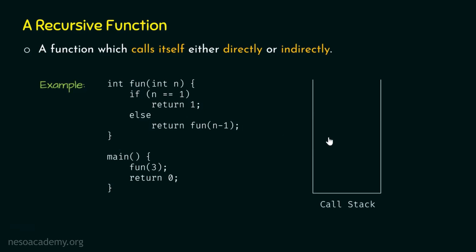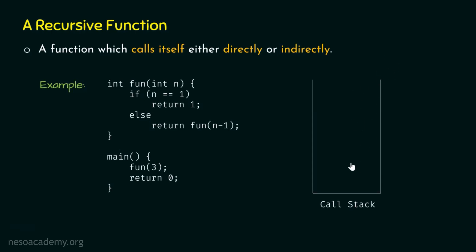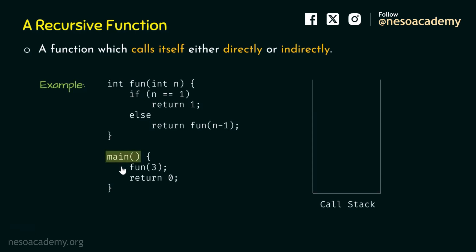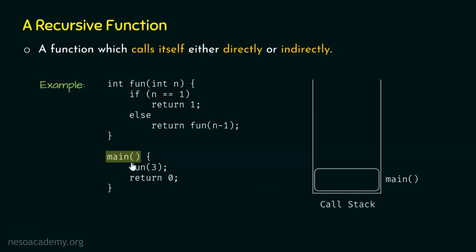Now let's create the call stack. We are assuming the call stack is like a jar, which is one-sided open — items can enter and exit from the top. Let's first call the main function. When a function is called, its activation record goes inside the stack, as we learned in the last lecture. The activation record of main is empty because there are no local variables and we are not assuming a return address here.